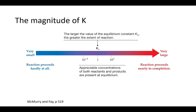So what does the number K mean? The magnitude of K tells us how far toward the products or the reactant side the equilibrium mixture ends up being. If K is really small — less than 10^−3 — then the reaction mixture is mostly reactants at equilibrium and the reaction hardly proceeds toward products at all. If K is really large — bigger than 10^3 — then the mixture is mostly products and the reaction proceeds to completion. Between 10^−3 and 10^3, there are appreciable concentrations of both reactants and products at equilibrium.